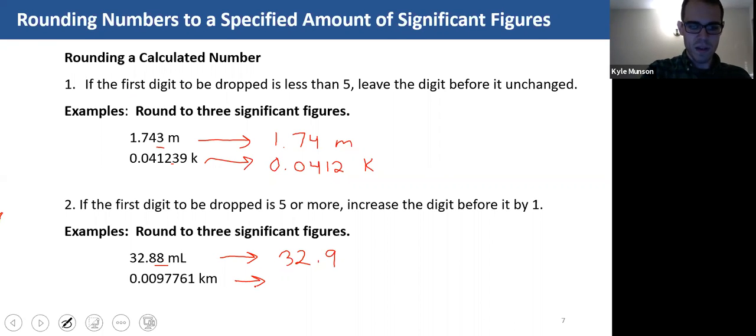This is going to be 0.00978 km, and remember those zeros in the front of the number are not themselves significant. We start at the nine, seven, eight. That seven is more than five, so we increase the digit before it by one.